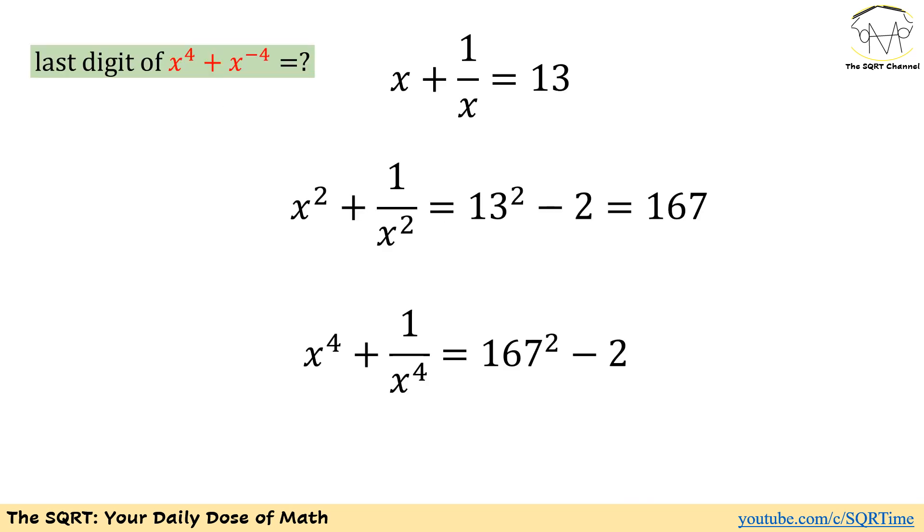Since we need to find x to the power of 4 plus x to the power of negative 4 we are going to start by taking power of 2 of what we have. We have x plus 1 over x equals to 13. If we take power of 2 from both sides we will end up with x squared plus 1 over x squared plus 2 equals to 13 squared.